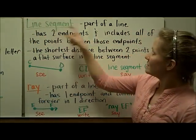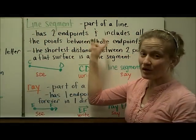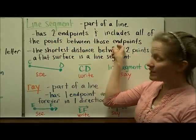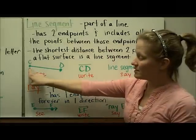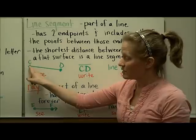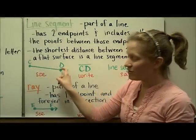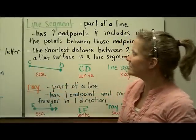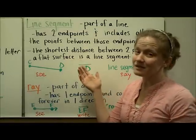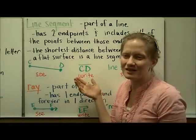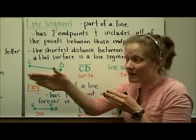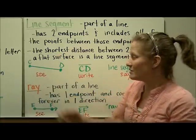Next is a line segment. A line segment is just part of a line. It has two endpoints and includes all of the points between those two endpoints. The line segment includes those endpoints and all of the points in between, even unnamed points. The shortest distance between two points on a flat surface is a line segment.